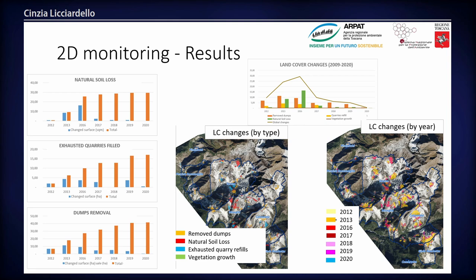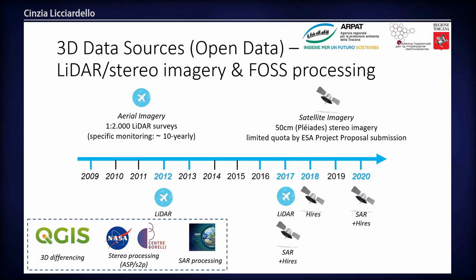The results show a layer with surface changes over the years and a layer with the kinds of changes detected. We can see that the trend of natural soil loss is constant over the last years, while other trends are increasing for dump removal and quarry refilling.